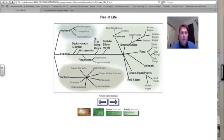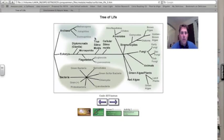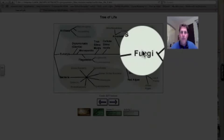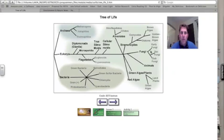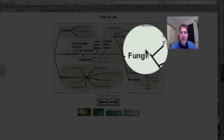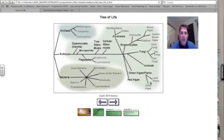Multi-cellularity evolved many times. As we look at our tree of life, we recognize that fungi, they're single-celled fungi and then we have multi-celled fungi. Plants, same thing. We have single-celled plants which become then multi-celled plants. Same thing with animals.